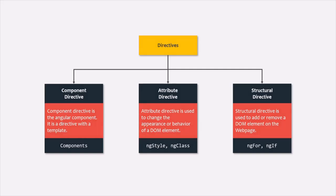Component directive is the Angular component — it is a directive with a template. Then we have attribute directive, which is used to change the appearance or behavior of a DOM element. For example, the ng-style and ng-class directives are attribute directives — we use these to change the appearance or behavior of a DOM element.